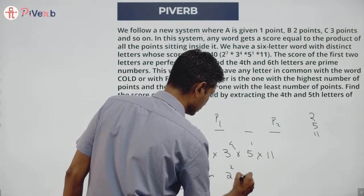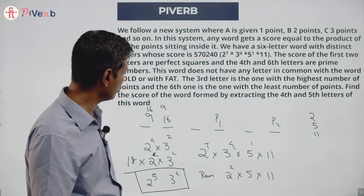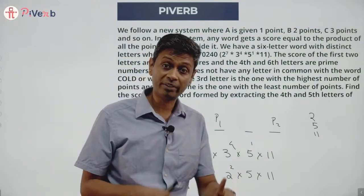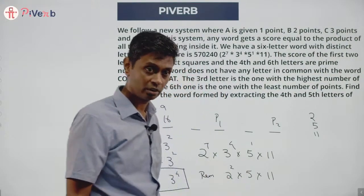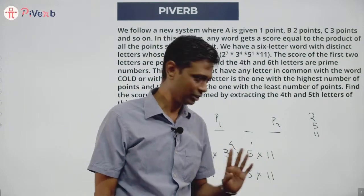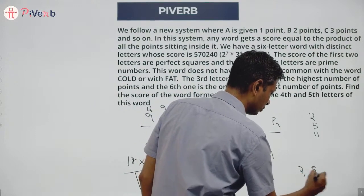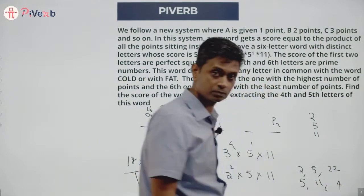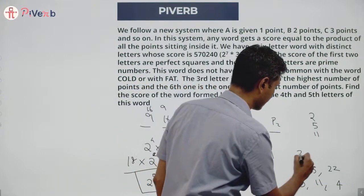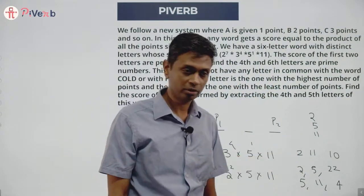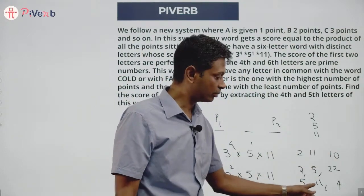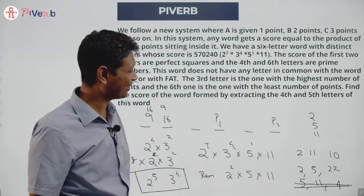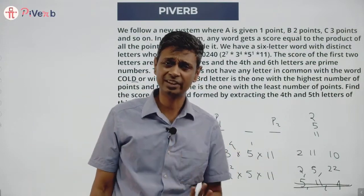The remaining factors 2² × 5 × 11 must be distributed among P1, P2, and one more letter — since 18 is already placed. Testing prime pairs: if primes are 2 and 5, the third number would be 22; if primes are 5 and 11, the third number would be 4 — but 4 is not allowed (D is excluded); if primes are 2 and 11, the third number would be 10. Since 4 is ruled out, the case of 5 and 11 is eliminated.